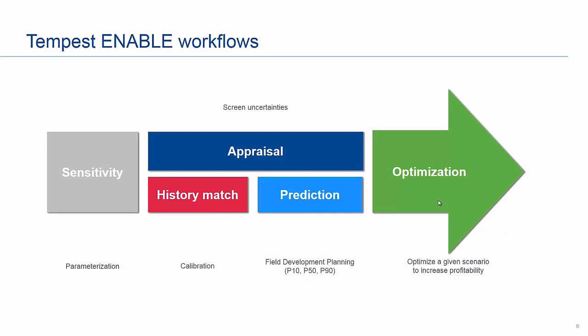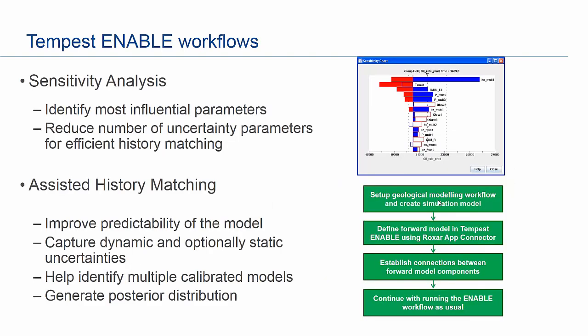Tempest Enable can be used at any stage of the field life, from appraisal to abandonment. You can use it for sensitivity analysis, which allows you to identify the most influential parameters — those with the most impact on production — and reduce the number of parameters for efficient history matching. Once you have identified the most influential parameters, you can move on to assisted history matching, where Tempest Enable helps improve the predictability of the model by identifying multiple calibrated models.